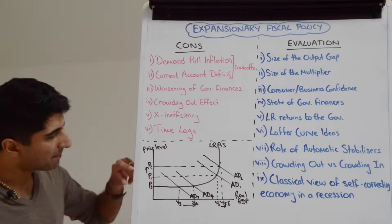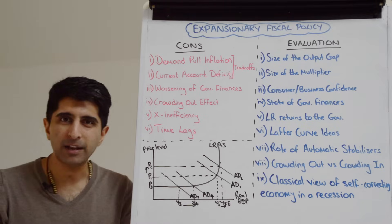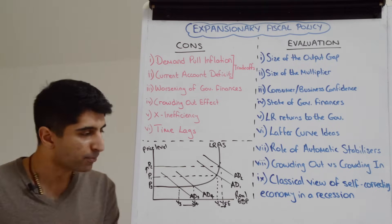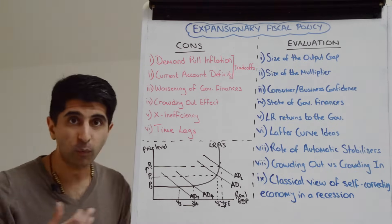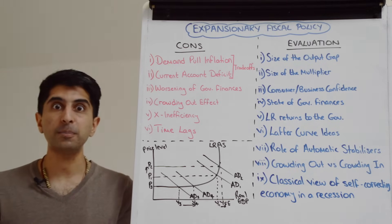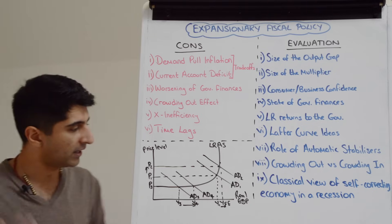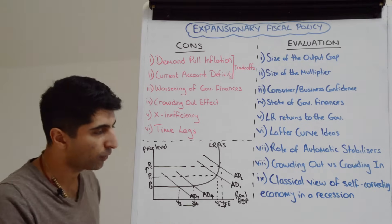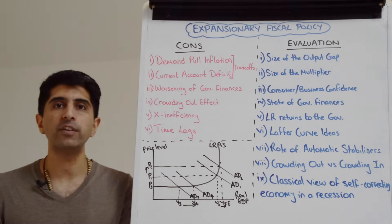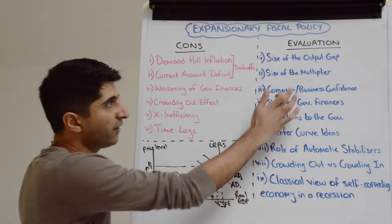Near full employment, an AD shift from AD1 to AD2 is more likely to cause demand-pull inflation than deliver benefits of higher growth and lower unemployment. However, if the economy is in a deep recession at Y3 with a large negative output gap and a lot of spare capacity, expansionary fiscal policy has greater potential to boost growth and reduce unemployment without much inflationary pressure.